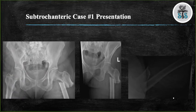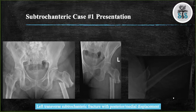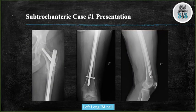Case 1. What do you see? We have three views: AP pelvis, AP left hip, and cross table lateral of a left hip, demonstrating a left transverse subtrochanteric fracture with displacement posterior and medial. How would you treat this fracture? This fracture was treated with a long cephalomedullary nail.